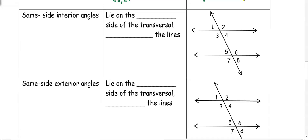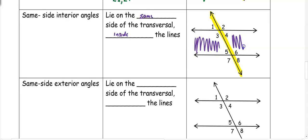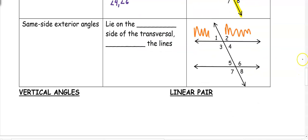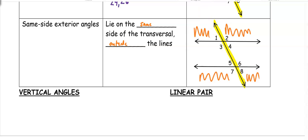Same side interior angles lie on the same side of the transversal and inside the lines — between the lines. An example would be angles 3 and 5, or angles 4 and 6. Same side exterior is the same idea but outside the lines. They're on the same side of the transversal and outside the lines. Examples of same side exterior would be angle 1 and angle 7, or angle 2 and angle 8.